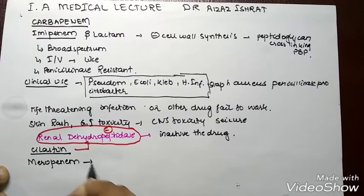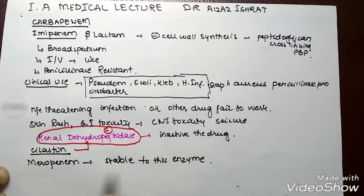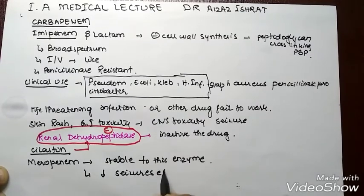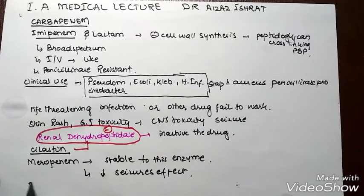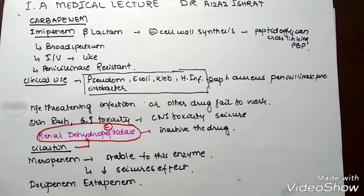In contrast, meropenem is stable to renal dehydropeptidase and has decreased seizure effects. There are two other carbapenems: doripenem and ertapenem, which we have discussed previously. That's all about imipenem and generally about the carbapenems. We have now completed penicillin and its relatives.